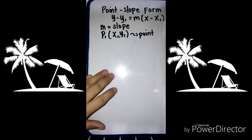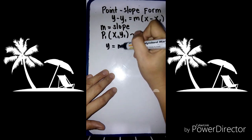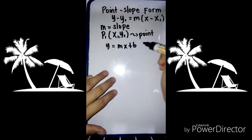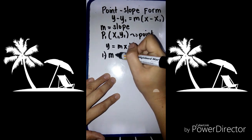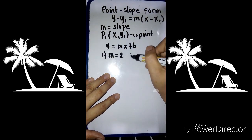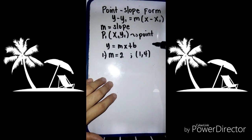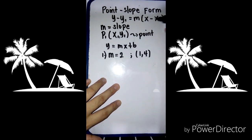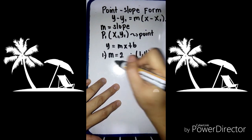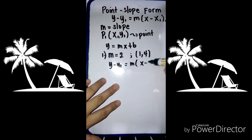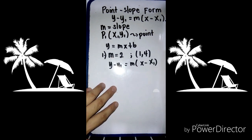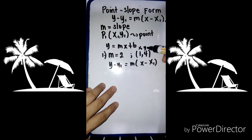To find the equation of the line in the form y equals mx plus b, we need a slope and a point. For example, we have slope m equals 2 and point (1, 4). Using the point-slope formula — y minus y sub 1 equals m times x minus x sub 1 — we're going to substitute the given slope and point. So this is your x sub 1 and y sub 1.